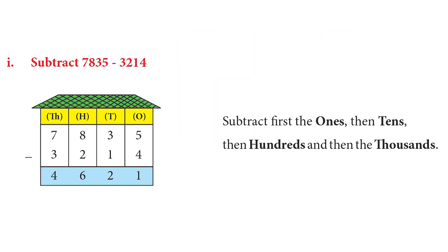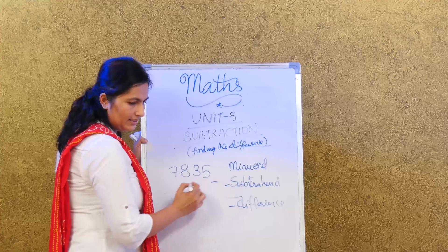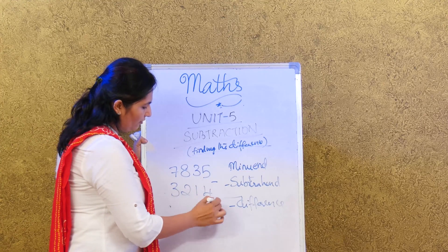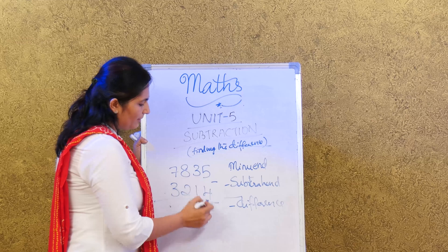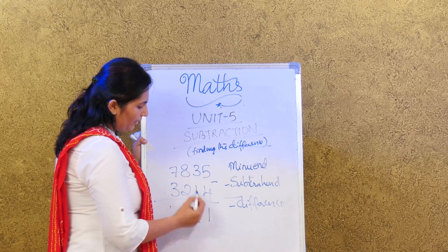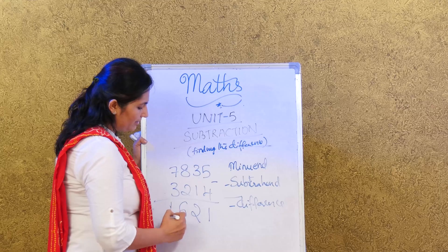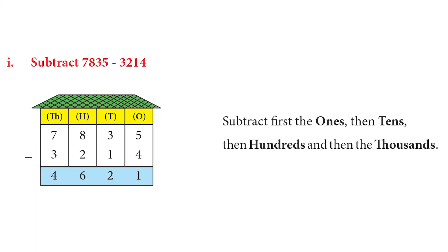Moving to page number 88 we see subtraction of larger numbers. There is nothing to worry about — it is the same subtraction, only the numbers have become more. It does not change any rules. Let us see an example: 7835 minus 3240. 5 minus 4 is 1, 3 minus 1 is 2, 8 minus 2 is 6, 7 minus 3 is 4. So 4621 is our answer.